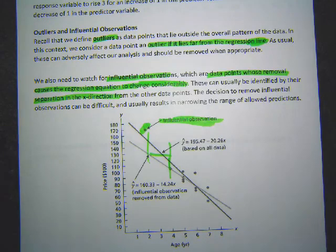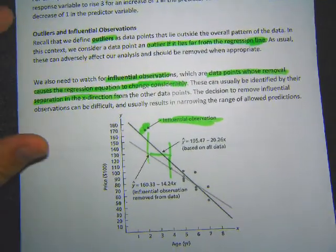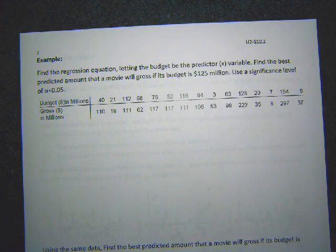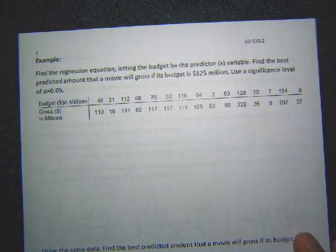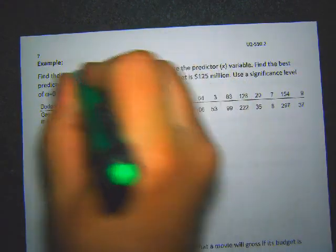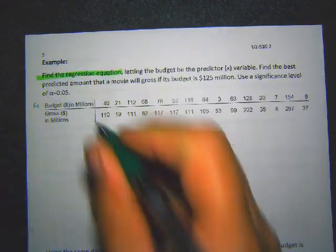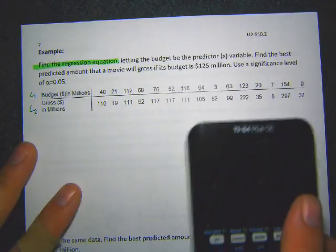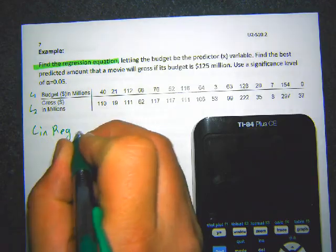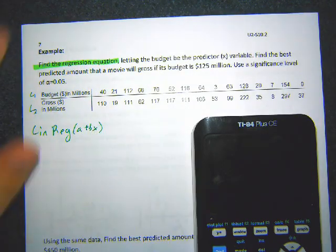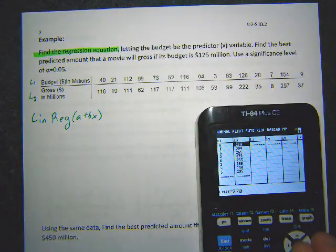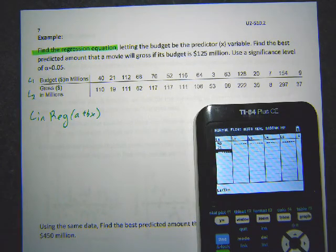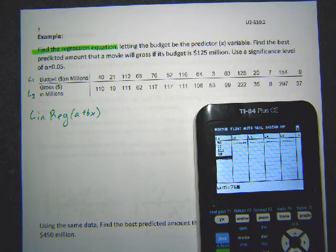That's something to be careful with when doing regression lines. What you will have to worry about in homework and quizzes is using regression equations to make predictions. We'll find the regression equation first. In this example we have movie budgets in millions as List 1 and gross earnings in millions as List 2. Let me go to STAT, Edit, clear the lists, and type in the budget values: 40, 21, 12, 68, 76, 52, 116, 64, 63, 128, 20, 7, 154, 9.